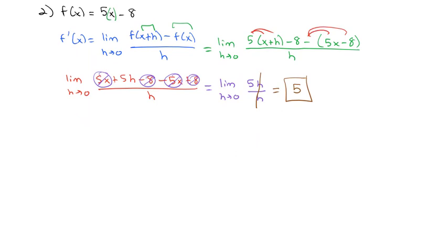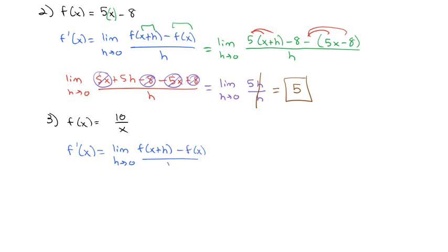Let's do one more example — a fraction problem. Let's try f of x equals 10 over x. The derivative f prime of x equals the limit as h goes to 0 of f of x plus h minus f of x, all over h. We replace x with x plus h to get the limit as h goes to 0 of 10 over (x plus h), minus the original function 10 over x, all over h.